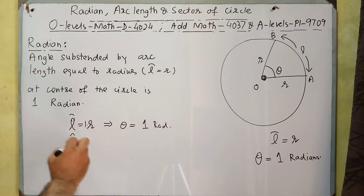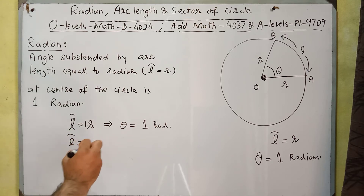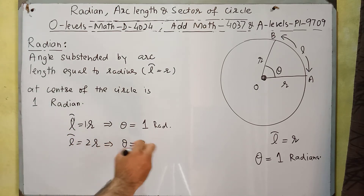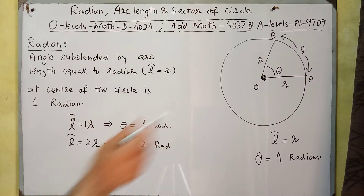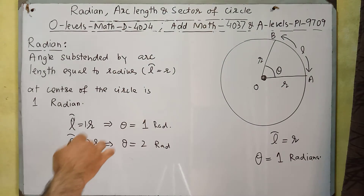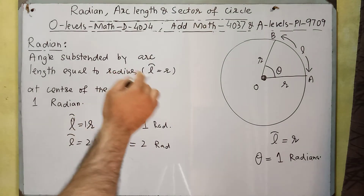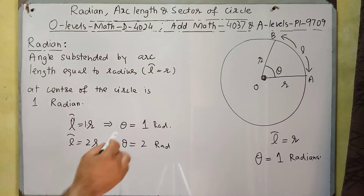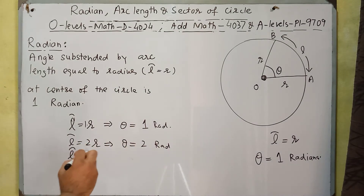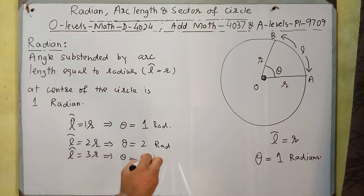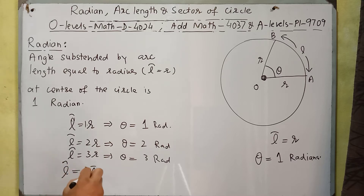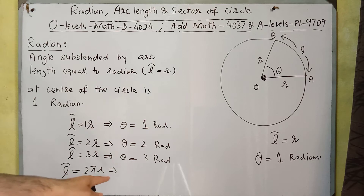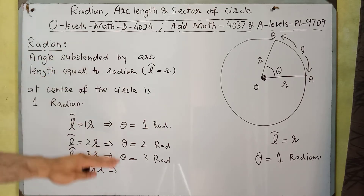If arc length is equal to 2r, the angle will be equal to 2 radians. If an arc length equal to 2r subtends an angle theta at the center of the circle, that angle equals 2 radians. Similarly, if arc length equals 3r, the angle will be 3 radians. Usually the total arc length of a circle is equal to 2πr, which is the circumference of the circle.